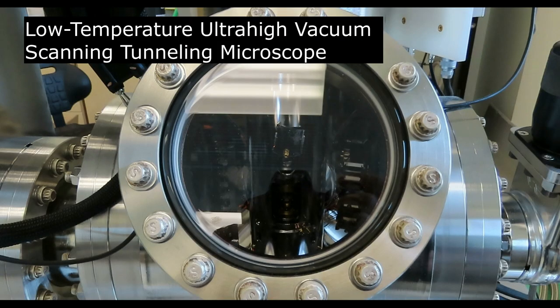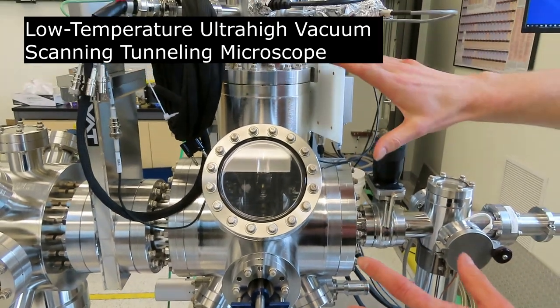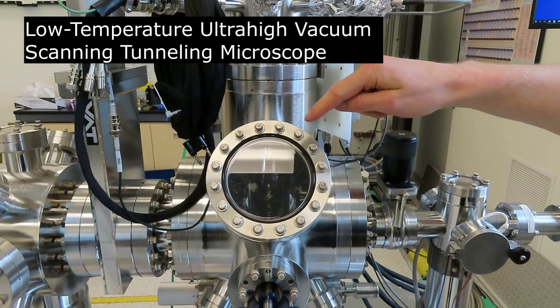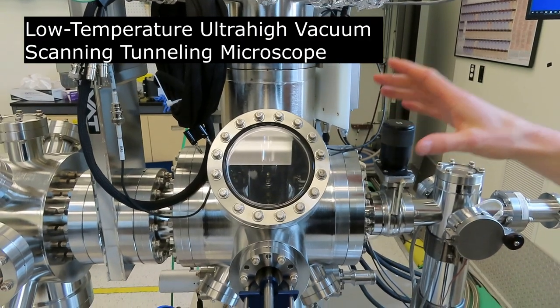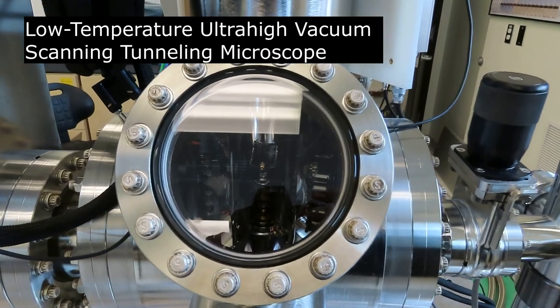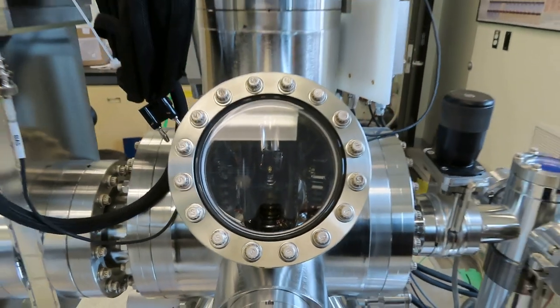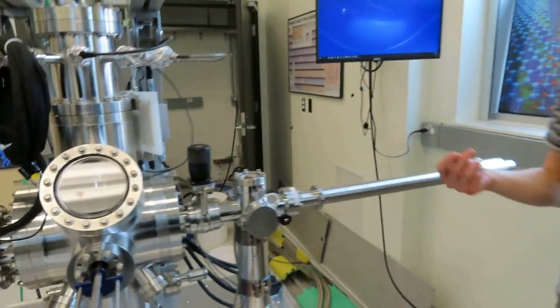This particular instrument is a low temperature, ultra-high vacuum STM. You see we have this big metal case with a little window you can look through. Inside the case, the pressure is very low—right now we're at 5.5 times 10 to the minus 10 torr. That's extremely low pressure, because atmospheric pressure is 760 torr, so that's a trillionth of atmospheric pressure.